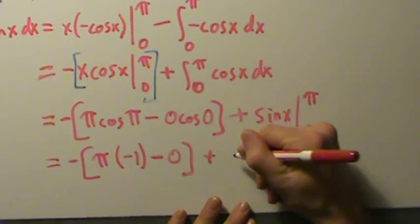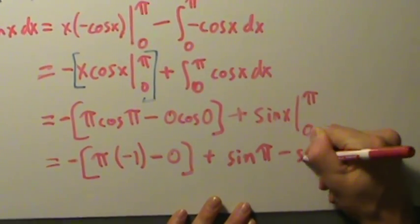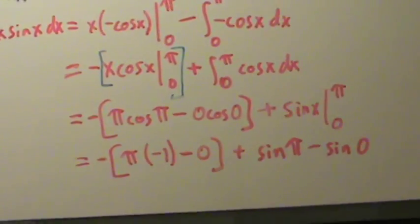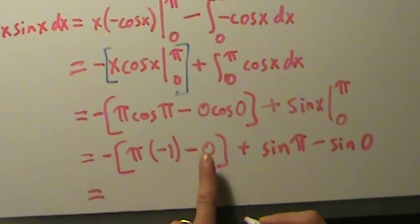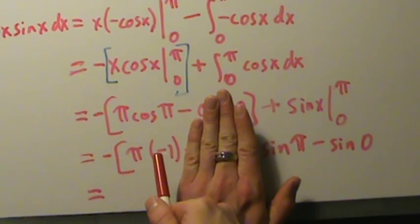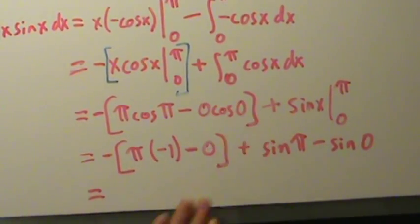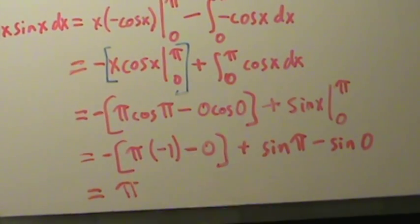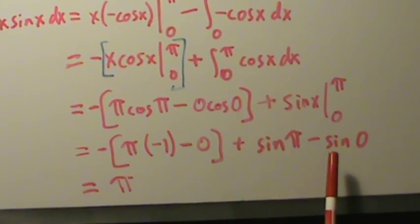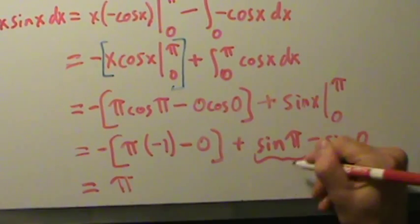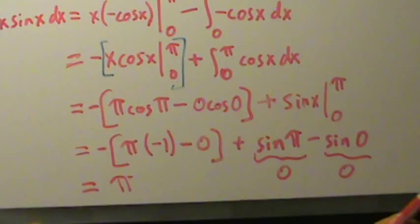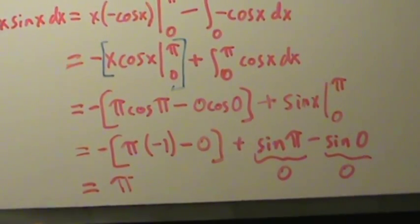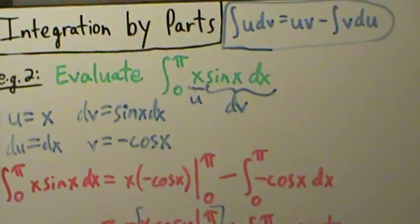Then plus sine of x evaluated from 0 to π, which is sine of π minus sine of 0. The sine of π is zero and sine of zero is also zero, so this is π times negative one — the negatives cancel — giving us π, plus zero minus zero. So we get just π.